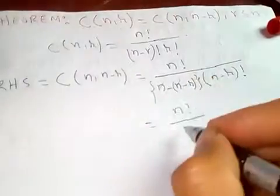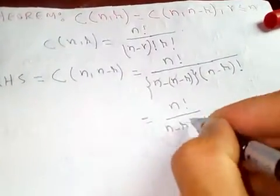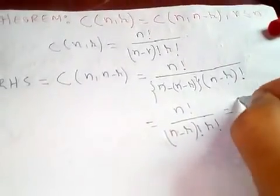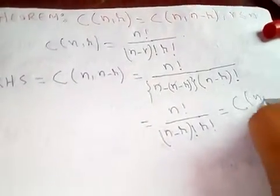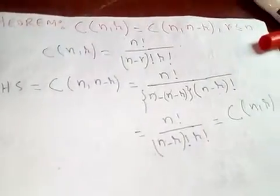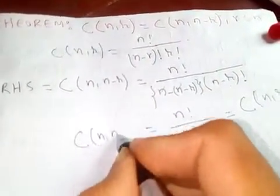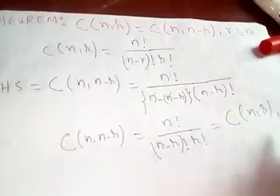These two will cancel: minus minus plus, n minus r factorial, this one, into r factorial, which is same as what? Combination of n, r. So this is our proof.